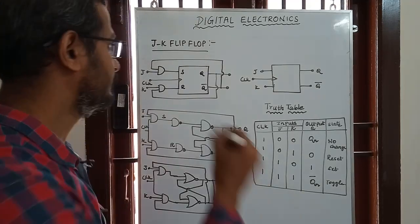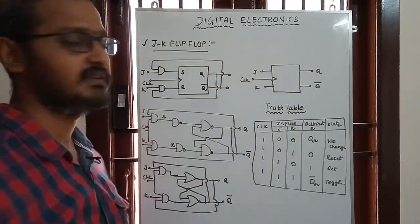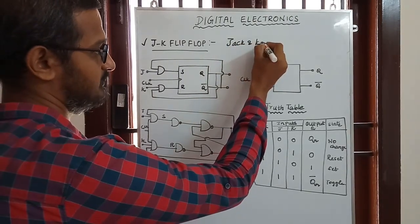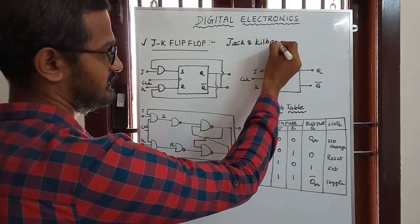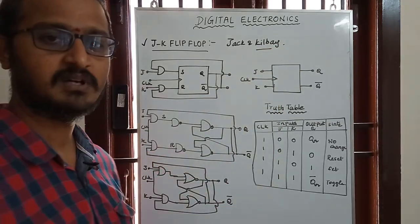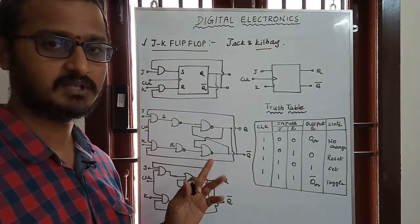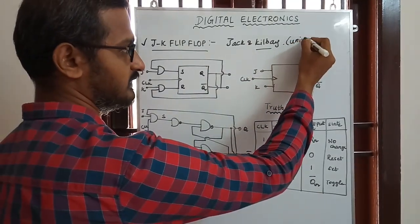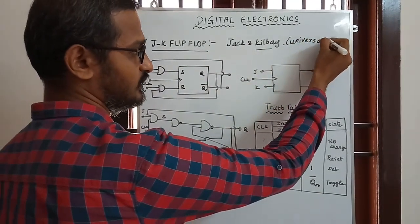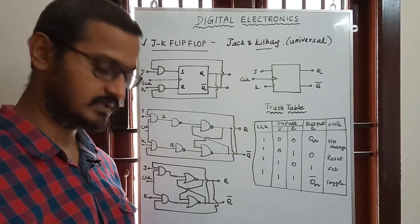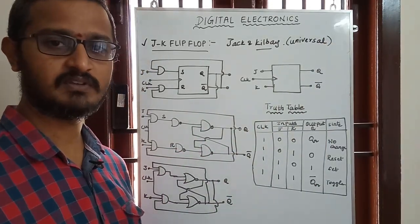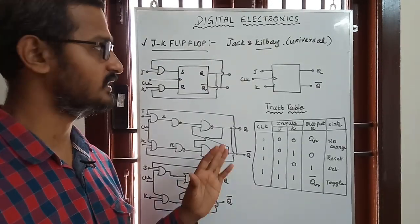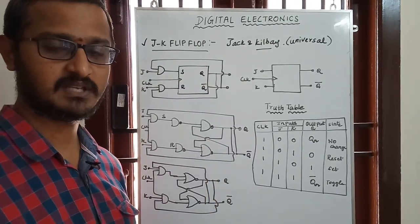Now let's see the third flip-flop: the JK flip-flop. JK stands for Jack and Kilby — two scientists associated with it. It is called the Universal Flip-flop because it is the most important flip-flop we use.